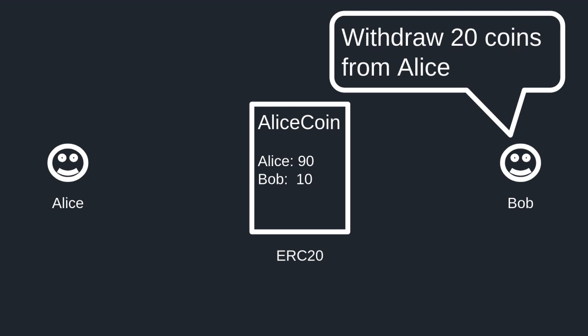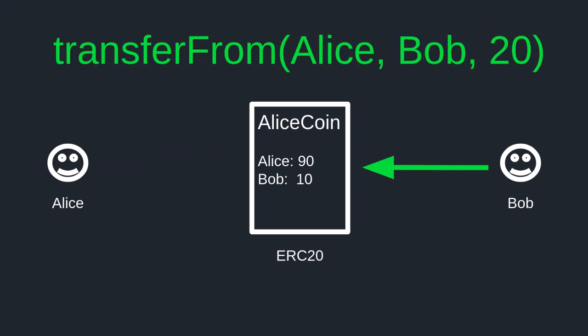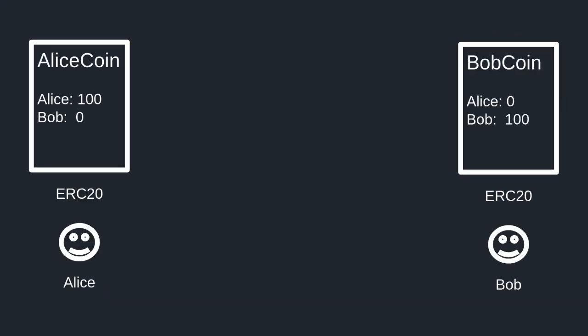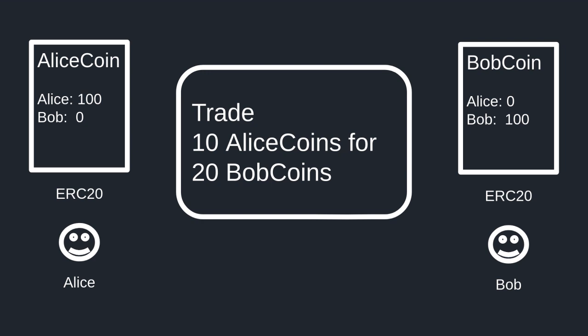In the previous video we learned how to send tokens on behalf of the token holder by using approve and transferFrom. In this video I want to take a step further and show you how you can use those functions to build a contract that can trade one ERC20 token for another.